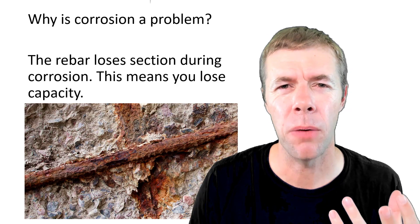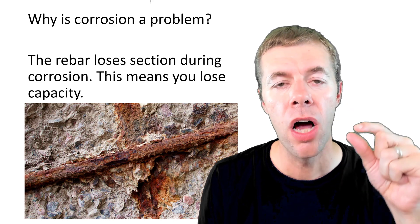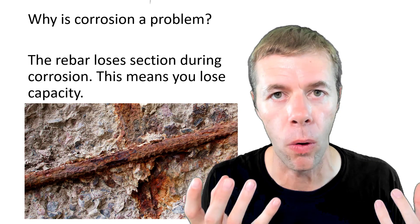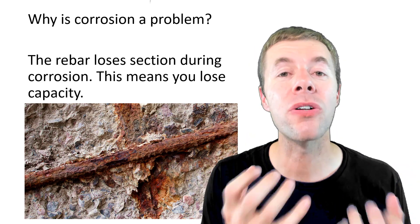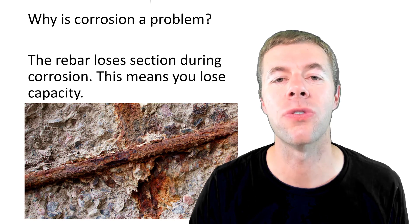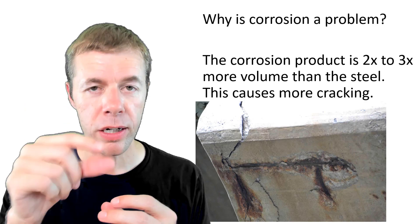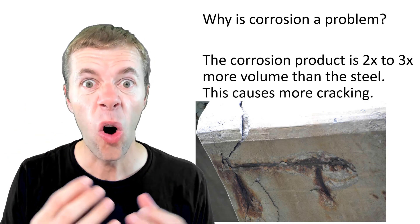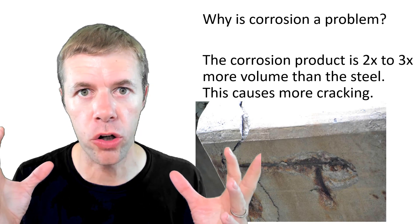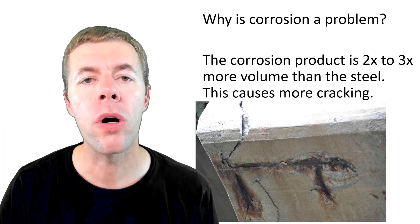So why is this a problem? Well when corrosion starts to happen it causes the cross section of our rebar to change. We actually lose area. We lose material. And as this corrosion starts to form more and more, the products that form, the corrosion products, are expansive. They'll actually blast the cover off the concrete which exposes the rebar for more corrosion.